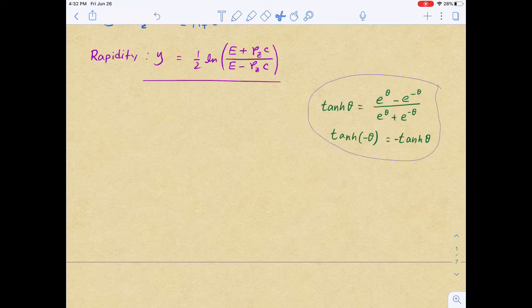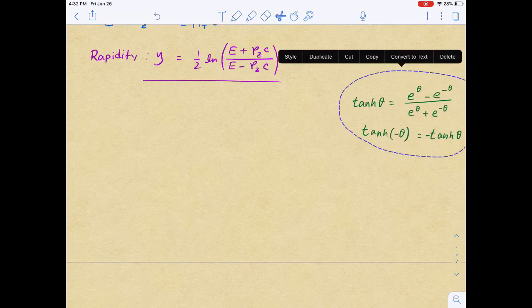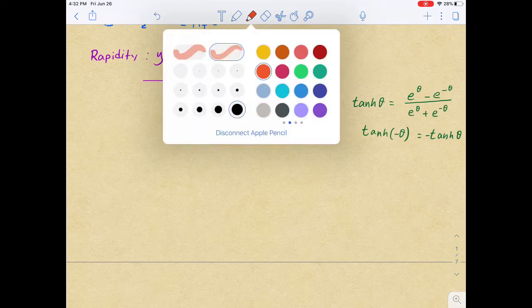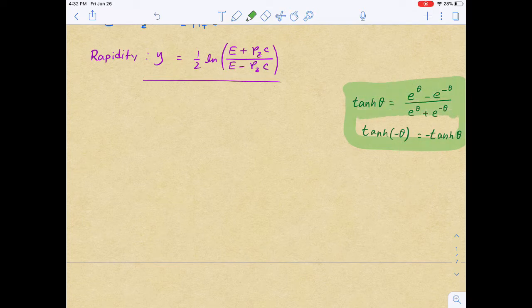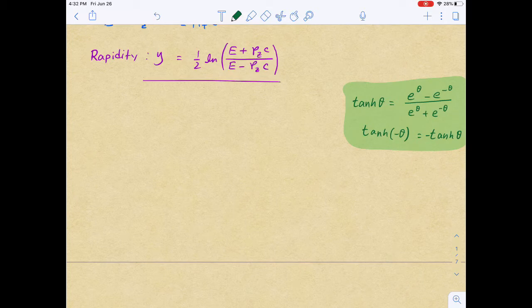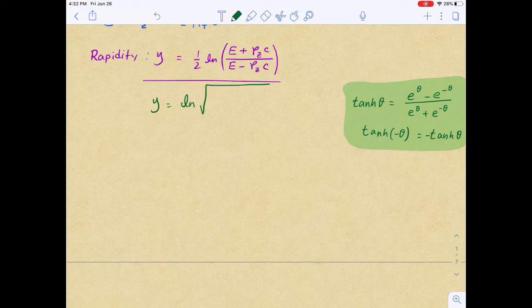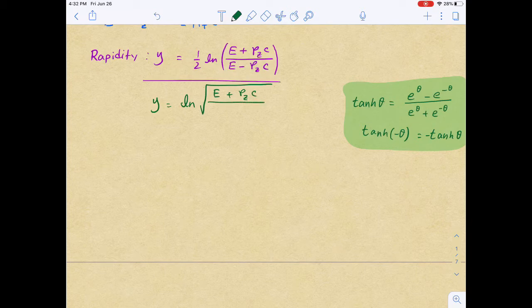And the other identity that we will use is tanh of negative theta is basically negative tanh theta. So looking at this rapidity term, it has one half, it has a natural log term, so we can just try to simplify it. And I will proceed with y is equal to another way of writing it.